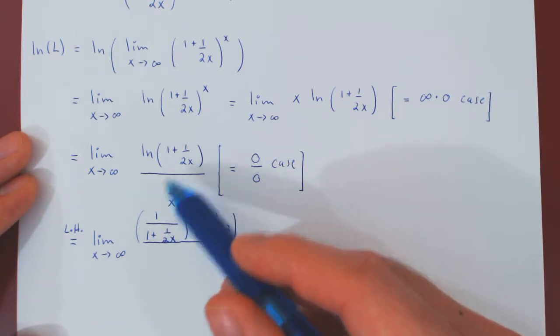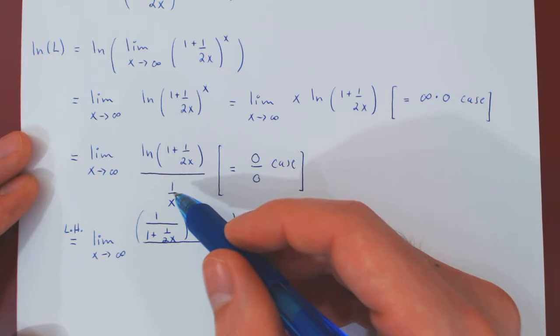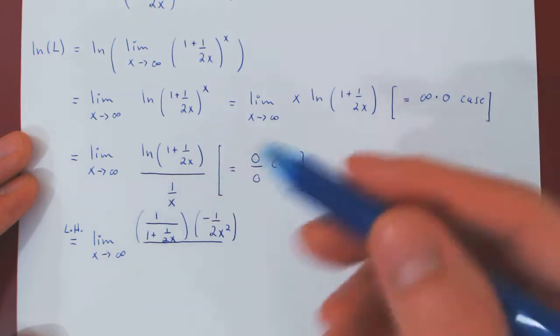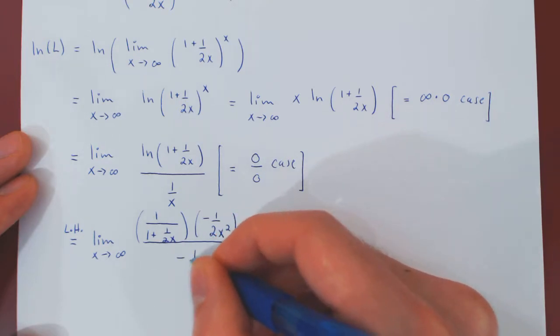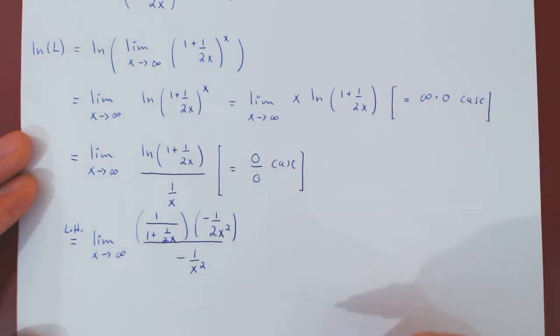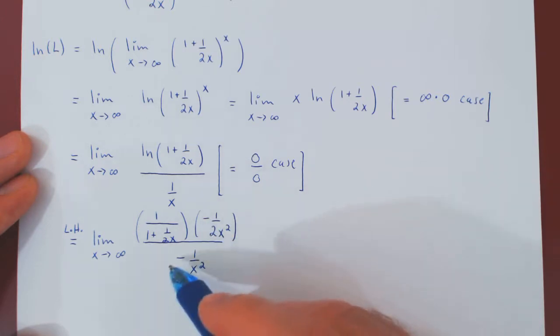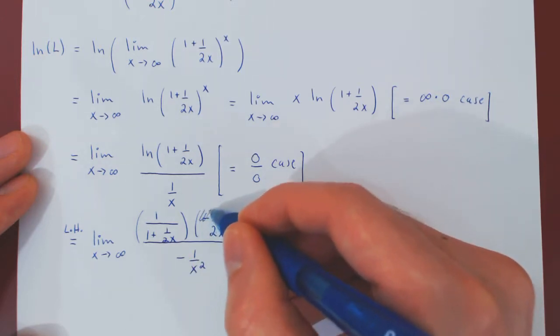Same for 1 over x, if you differentiate this. Think of this as x to the minus 1, power rule, negative x to the negative 2, if you prefer, negative 1 over x squared. And now we can simplify. We have a negative 1 over x squared on top and on the bottom, so they cancel each other out.